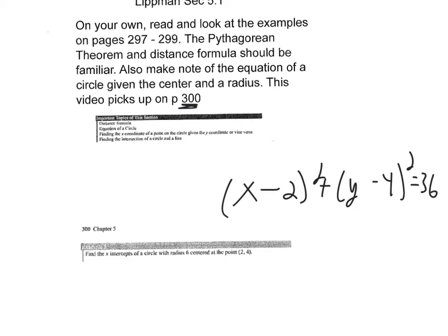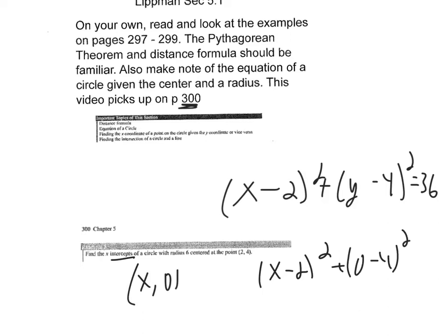If I'm looking for the x-intercepts, all the y-coordinates are going to be zero. So that leaves me (x − 2)² plus (0 − 4)² equals 36.